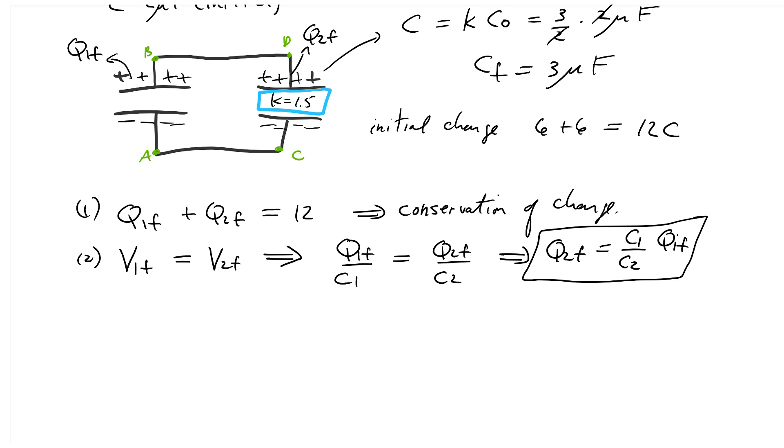If we go back to equation 1 now and eliminate Q₂f, the final charge on the right-hand side, we're going to get Q₁f plus, instead of Q₂f I'm going to substitute my equation from the box, this is going to be C₁ over C₂ times Q₁f. This must equal 12.